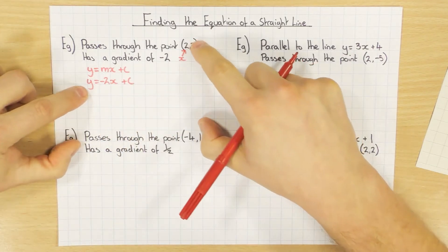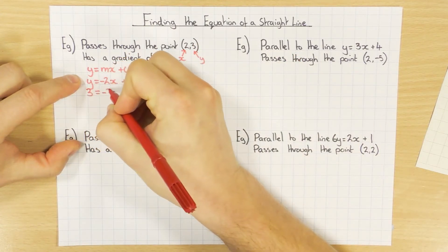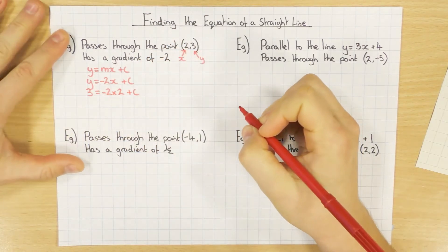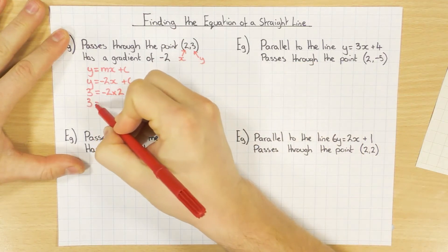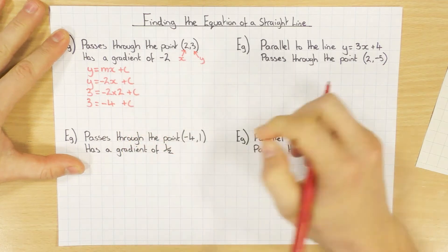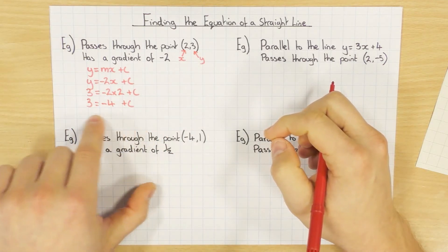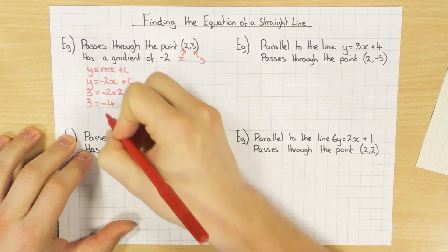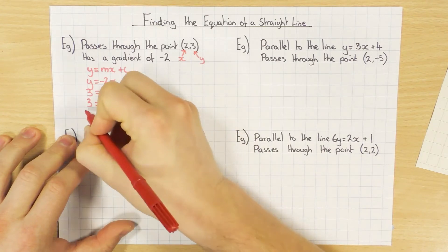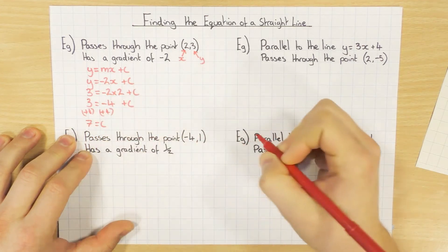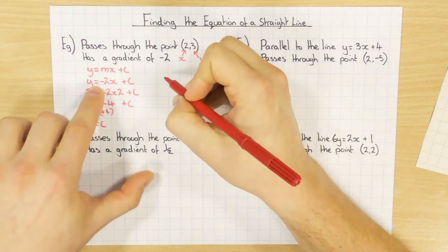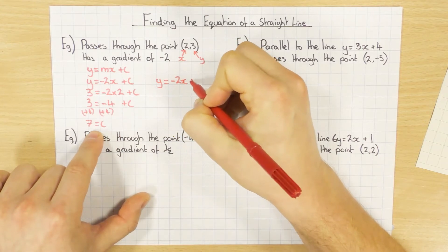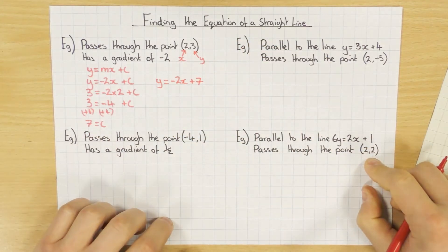So we can substitute those values in and then work out what c is. So y in this case is 3 equals minus 2 times x, well x is 2, plus c. A little bit of tidying up: minus 2 times 2 is minus 4 plus c. I'm going to use the balance method — if I add 4 to both sides, c equals 7. Just come back up to your equation and substitute that in: y equals minus 2x plus 7. And there you go, you've just worked out the equation of the line.